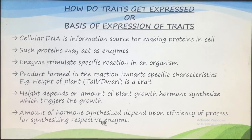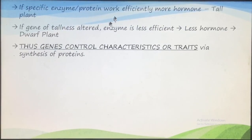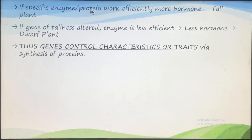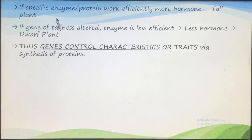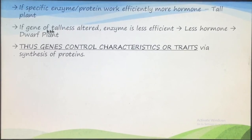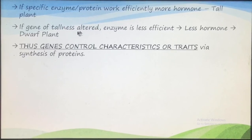If growth hormone is produced in large amounts, the height of the plant will be more; if growth hormone is less, the plant will be dwarf. So height depends on the amount of growth hormone synthesized, and the amount of hormone depends on the efficiency of the enzyme synthesizing it. If the enzyme is synthesized in greater amounts, more hormone will be produced and the plant will be tall.